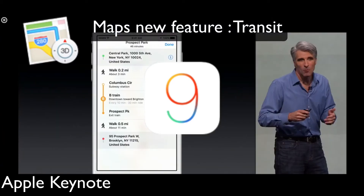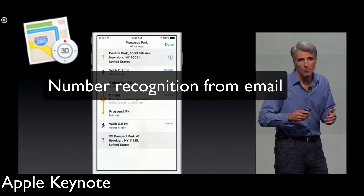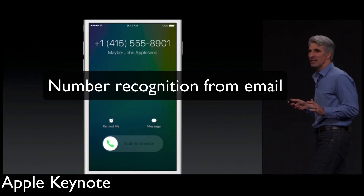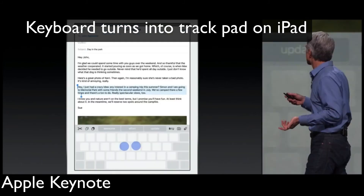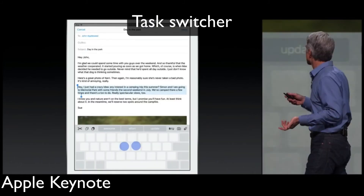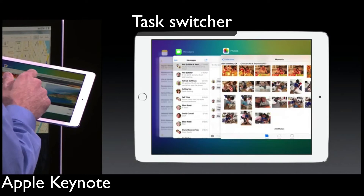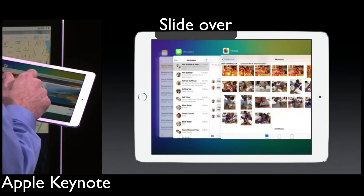Maps' new feature is transit on iOS 9. Number recognition from email, and the keyboard turns into a trackpad on iPad. The task switcher looks very nice on iPad and is available on iPhone as well.